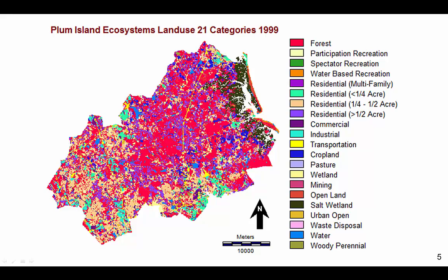GEOMOD allows maps of driver variables to guide the spatial allocation. We use a map of 21 categories, which derive from aerial photography. The map comes from the state of Massachusetts and shows categories at 1999. Each driver image must be a categorical variable. If the variable is continuous, such as elevation or distance, then the variable must be binned into categories before it can be used in GEOMOD.